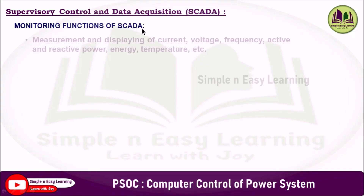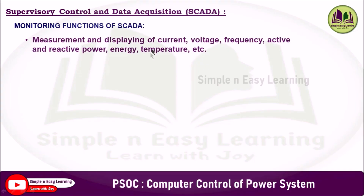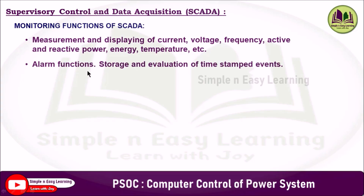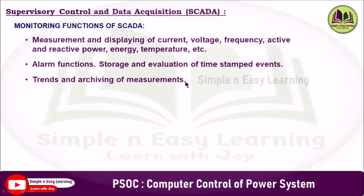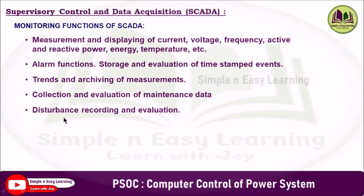The monitoring functions of SCADA include measurement and display of current, voltage, frequency, active and reactive power, energy, and temperature, as well as alarm functions, storage and evaluation of time-stamped events, trends and archiving of measurements, collection and evaluation of maintenance data, and disturbance recording and evaluation.